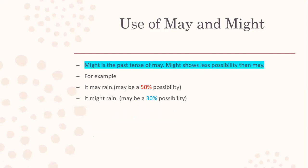Now the use of might: might is the past tense of may, and might shows less possibility than may. When we say 'It may rain,' there's a possibility of about 50%, but when we say 'It might rain,' it expresses a possibility of about 30%. That's why we use might instead of may when there is less possibility.